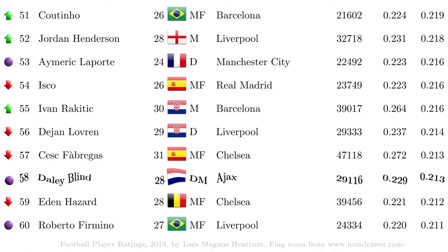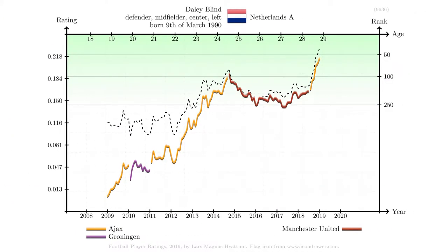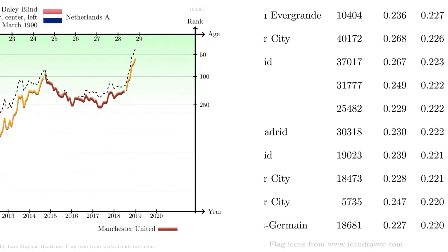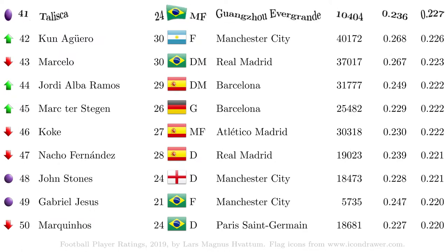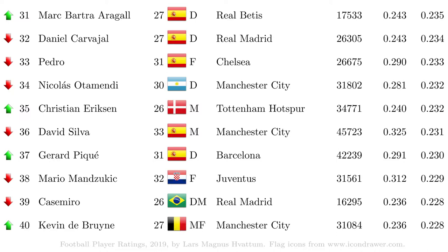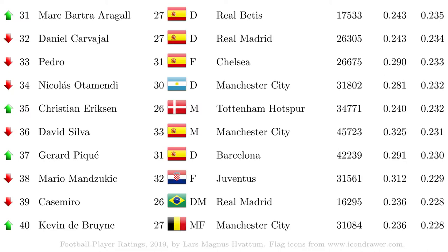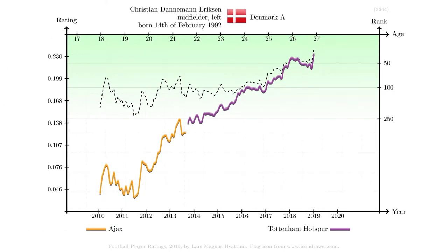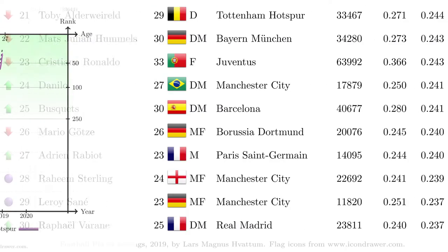Daley Blind, at number 58 on the list, is not the highest rated player from the Netherlands. However, he is the highest rated player currently playing on a Dutch team. At number 41 on the list we find an interesting entry: Taliska is the only player in the top 100 from the Chinese league, and also the highest rated player on the list that has not yet appeared for his national team. The highest rated player from Scandinavia is Christian Eriksen, as was also the case on our previous list. He has taken some steps in the right direction, moving from 63rd place on the previous list to 35th place on the current list.